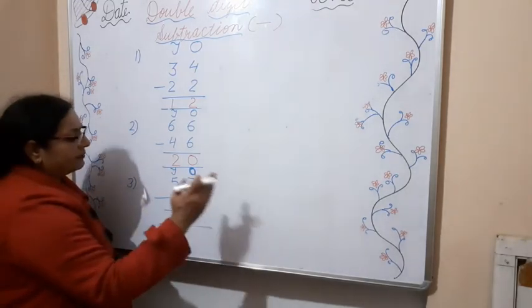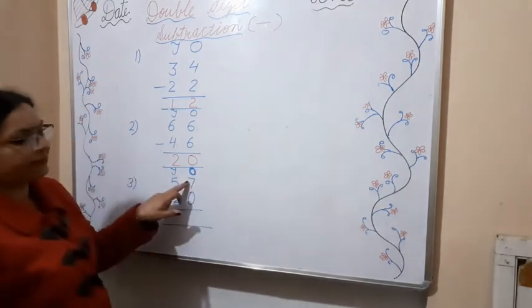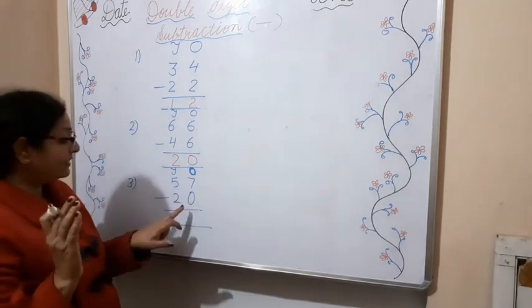My first number is here. We will start from the ones side. The number is 7, and we have to subtract 0.